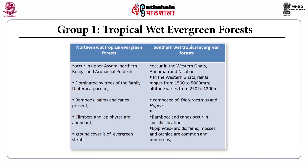The tropical wet evergreen forests have two types: northern and southern. The northern wet tropical evergreen forests occur in upper Assam, northern Bengal, and Arunachal Pradesh. The southern wet tropical rainforests occur in the Western Ghats and Andaman and Nicobar. The northern type is composed of trees of the family Dipterocarpaceae, bamboo, palms, and canes.